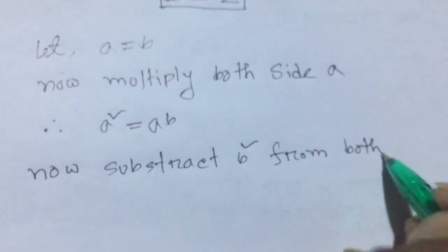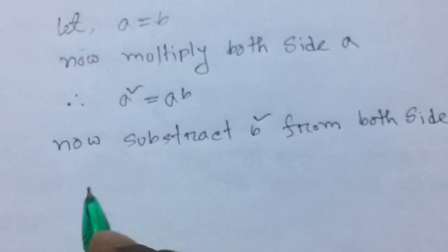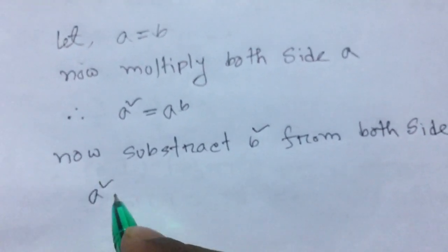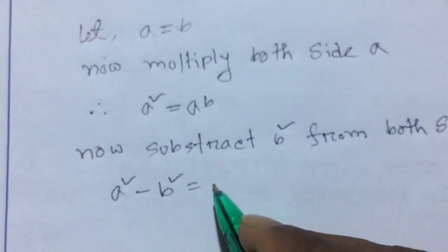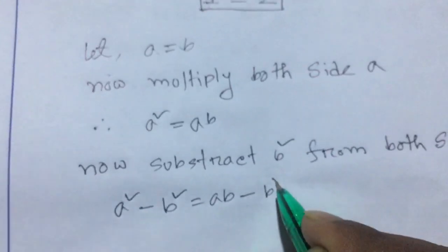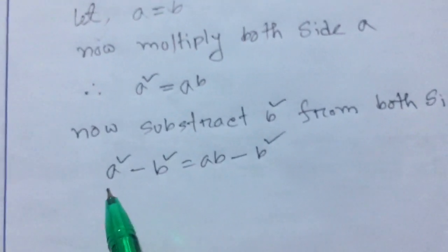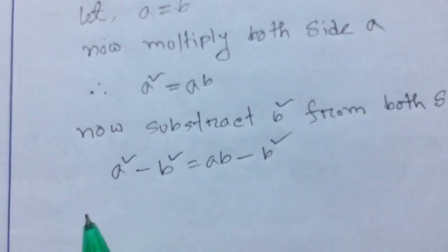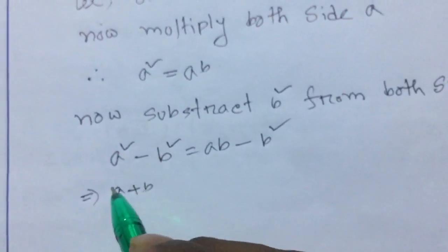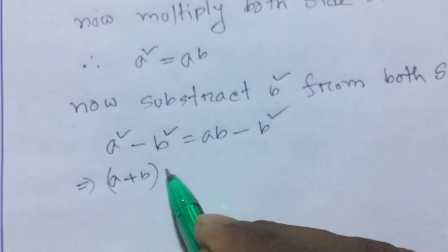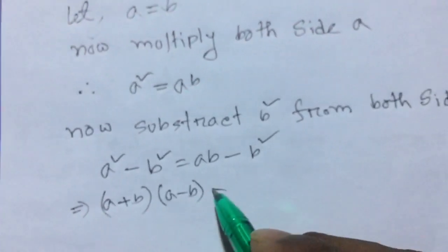From both sides, so a squared minus b squared equal to ab minus b squared. Now we can see that the rule a squared minus b squared equal to a plus b into a minus b on the right side.